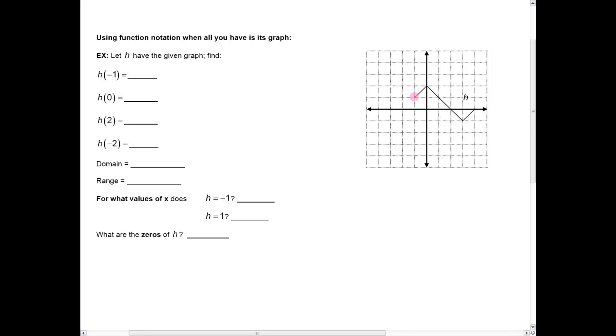For example, when I look at this graph right here, I see that the ordered pair negative 1, 1 is on that graph. And so that means that since this is a graph I've described by the letter h, that means that h of negative 1 is equal to 1.